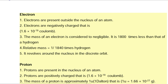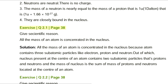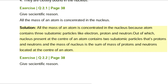Exercise Q2.1, page 38. Give scientific reason: All the mass of an atom is concentrated in the nucleus. Solution: All the mass of an atom is concentrated in the nucleus because an atom contains three subatomic particles — electron, proton, and neutron — out of which the nucleus at the center contains two: protons and neutrons. The mass of the nucleus is the sum of the masses of protons and neutrons located at the center of the atom.